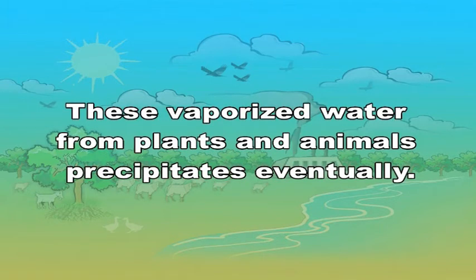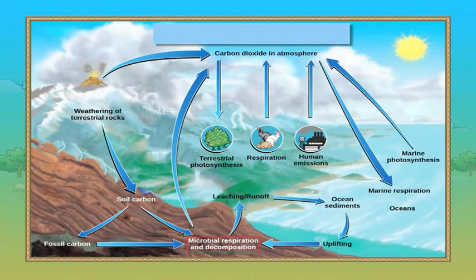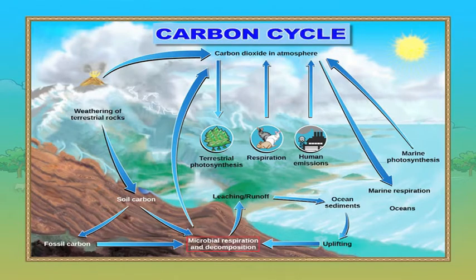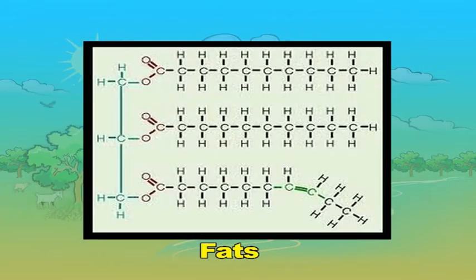Vaporized water from plants and animals eventually precipitates. Thus, in these ways, the biological water cycle remains operating. Now we will be studying the last and most important cycle, that is the carbon cycle. Carbon is considered the building block of life as it is the main component of biological compounds and many minerals. Carbon is best suited for joining elements to form compounds necessary for life such as sugar, starch, fats and proteins.